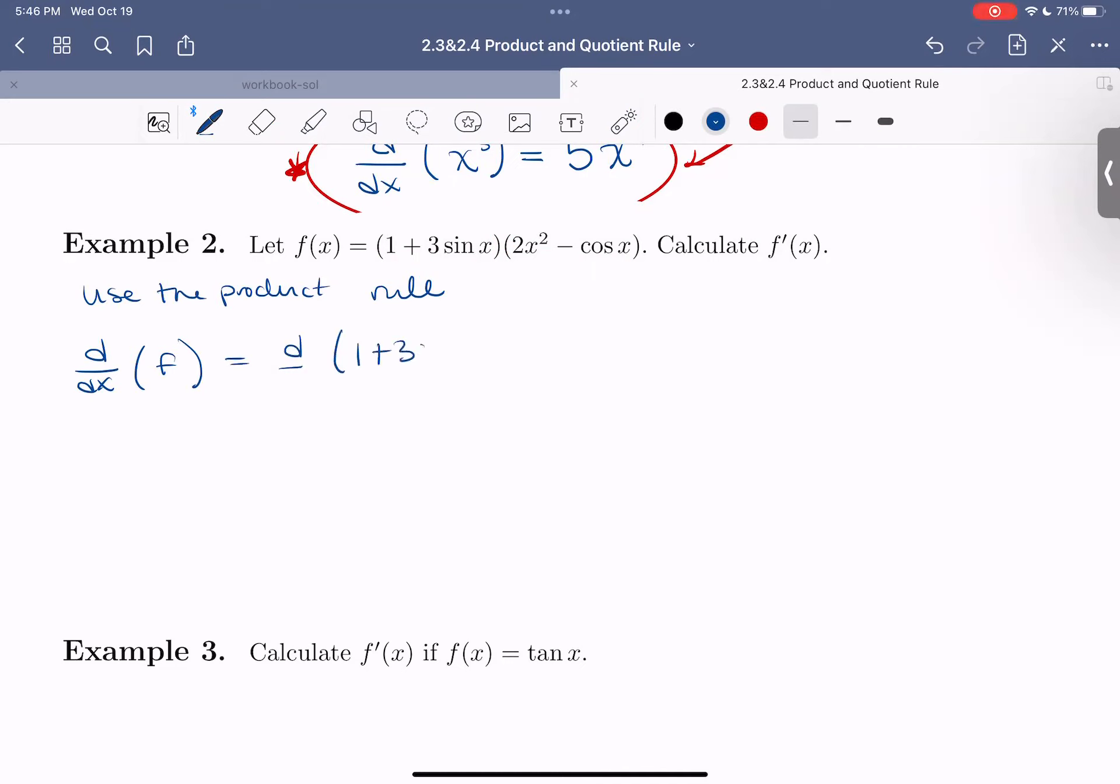...plus the first function (1 + 3sin x) times the derivative of that second function (2x² - cos x) with respect to x.